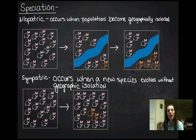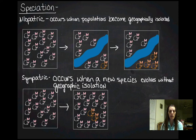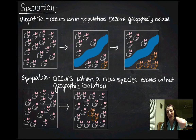In plants, sympatric speciation is especially easy to see because it's very common to have polyploidy — basically a doubling, tripling, or quadrupling of the chromosome number. For example, if a plant normally has 13 pairs of chromosomes and during meiosis something goes wrong, you could suddenly get an offspring with 26 or 39 pairs of chromosomes. That would be an example of immediate speciation, because as long as those plants are capable of reproducing, you can see how that immediately gives rise to a new species.